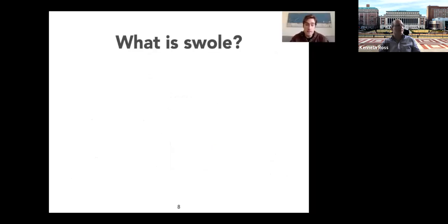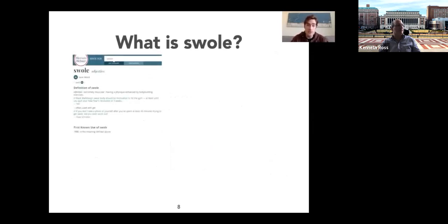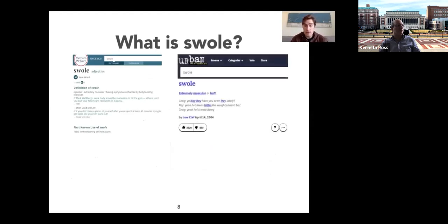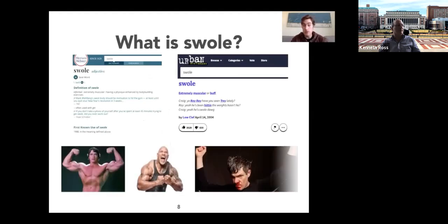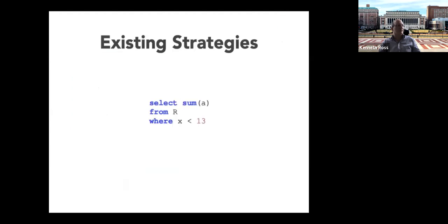The definition of 'swole' from Merriam-Webster means someone who is extremely muscular. Now, let's quickly go over three existing code generation strategies for the simple example query computing the sum of A where X < 13. The first is the data-centric strategy from the HyPer project (2011): a for loop over each tuple, an if conditional evaluating the predicate X < 13, and if true, the sum is incremented with the corresponding A value.